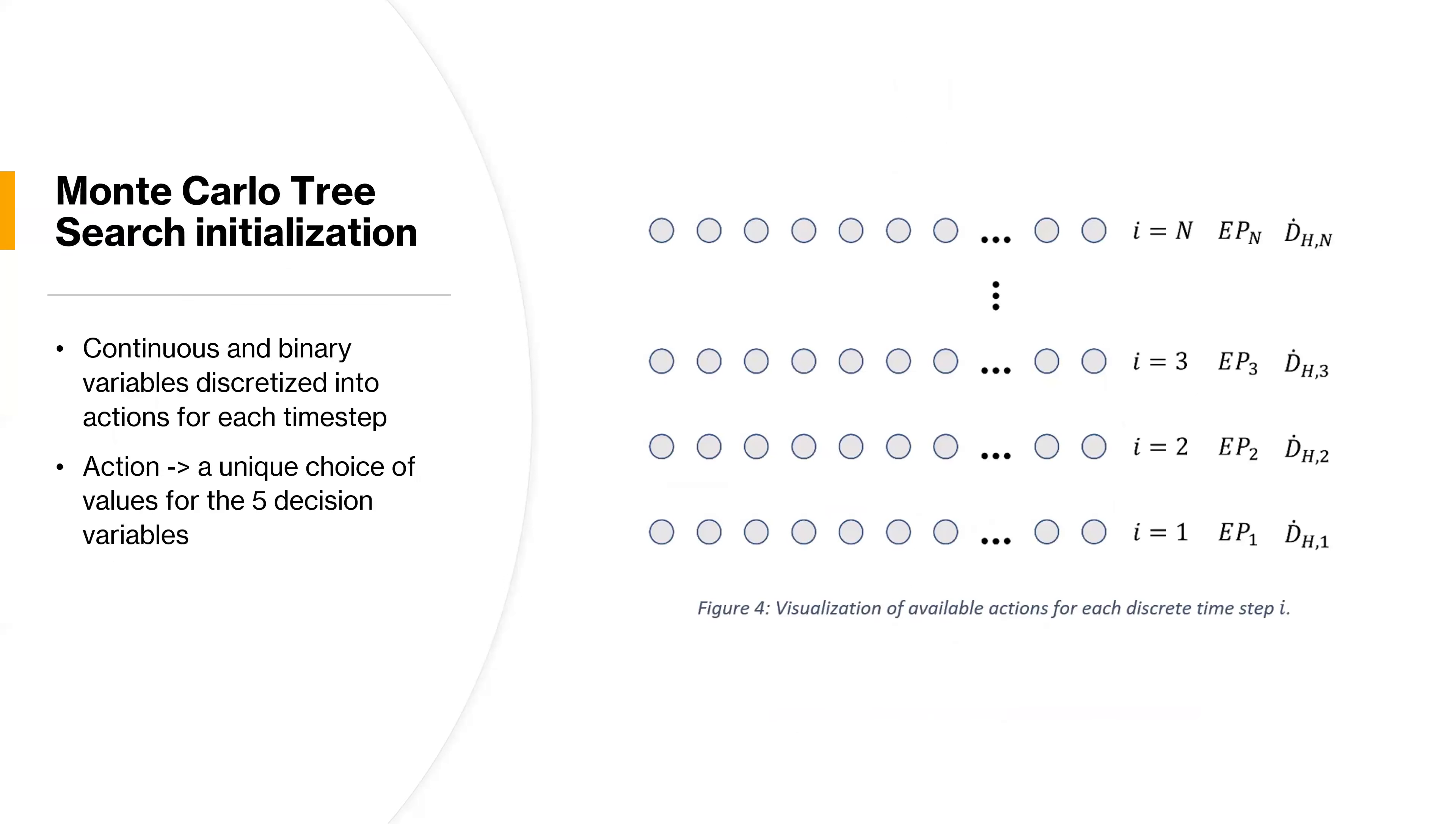Okay, so on to the Monte Carlo Tree Search initialization procedure. Well, when we have a search tree, we need a set of finite, we need a finite amount of actions we can choose between when we navigate the search tree. And we basically obtain this for our optimization problem by discretizing our variables into some given amount. And then an action in our cases is then given as a choice of values for our five decision variables that we have in this specific optimization problem.